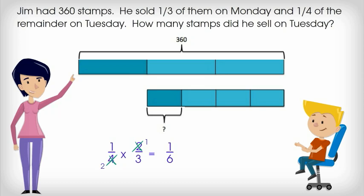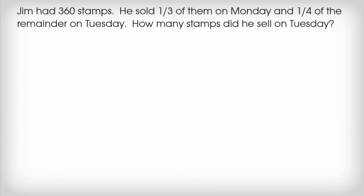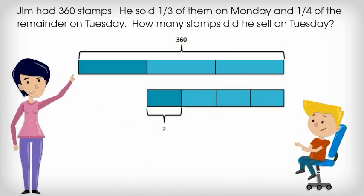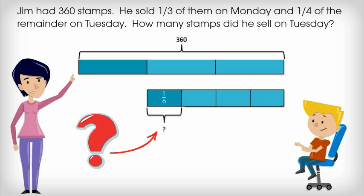One fourth times two thirds equals one sixth. Jim sold one sixth of his stamps on Tuesday. But wait, we're not done yet — one more step. We know that he started with a total of 360 stamps on Monday. We also just figured out that he sold one sixth of his stamps on Tuesday. So we can find the actual number of stamps Jim sold on Tuesday and fill in our question mark on the bar model.